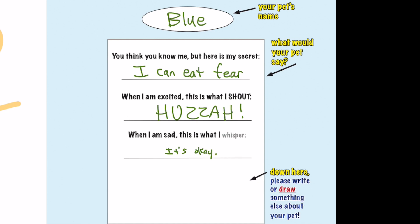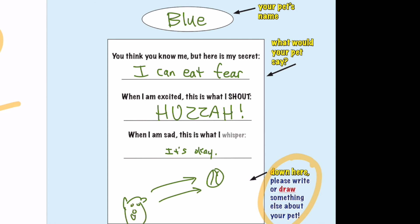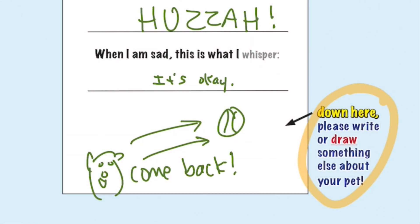Down here at the bottom of this page, write or draw something else about your pet. You could draw something about your dog or cat, or write anything else you want. I'm going to draw a tennis ball because Blue loves to chase the tennis ball — so this right here is a tennis ball sailing through the air. And then I'm going to try and draw Blue down here. Blue is yelling to the tennis ball because he loves to play fetch. Draw or write whatever you want there — again, you can pause this and come back.